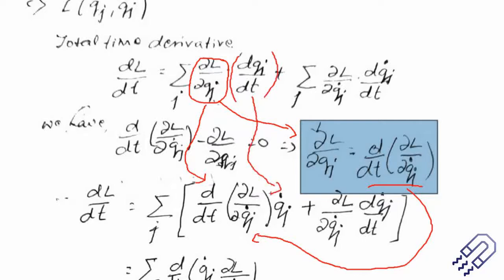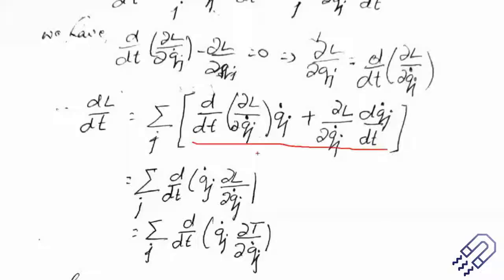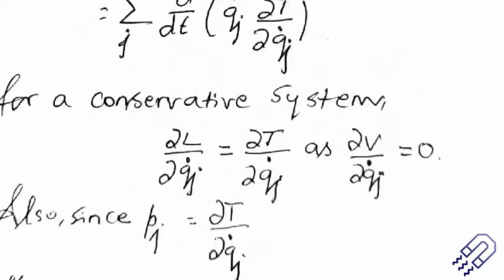For a conservative system, L equals T minus V, and V is not dependent on q_j dot. So in place of L we substitute T minus V, and del V / del q_j dot is zero. Therefore del L / del q_j dot simplifies to del T / del q_j dot. Please make sure to write these steps in your exam and not skip them. We also know that the generalized momentum p_j equals del T / del q_j dot, so del T / del q_j dot is nothing but the generalized momentum.